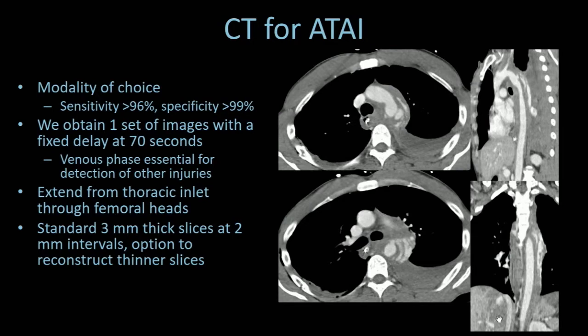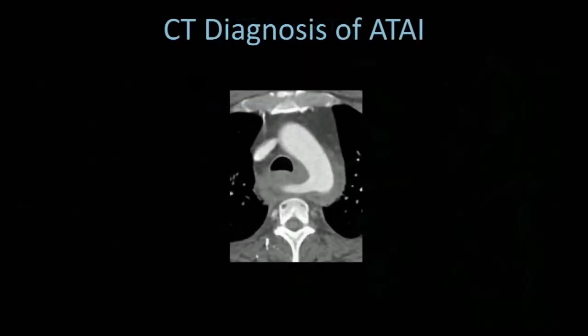CT for acute traumatic aortic injury is very sensitive and very specific. At our institution, we get one set of images with a fixed delay at 70 seconds. Venous phase is essential for detection of other injuries. We extend from the thoracic inlet through the femoral heads and obtain standard 3-millimeter thick slices at 2-millimeter intervals. That overlap is important because multi-planar reconstructions are often essential.